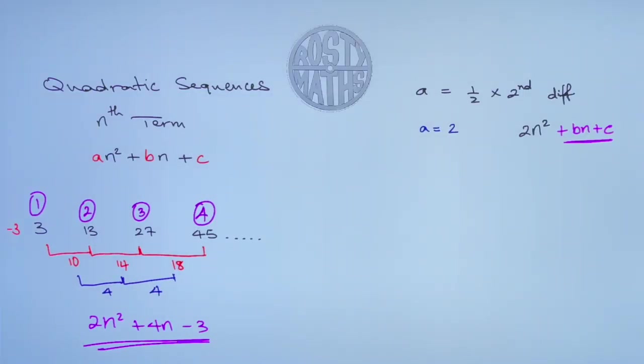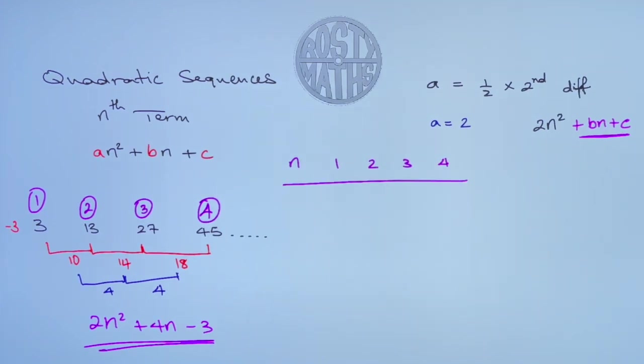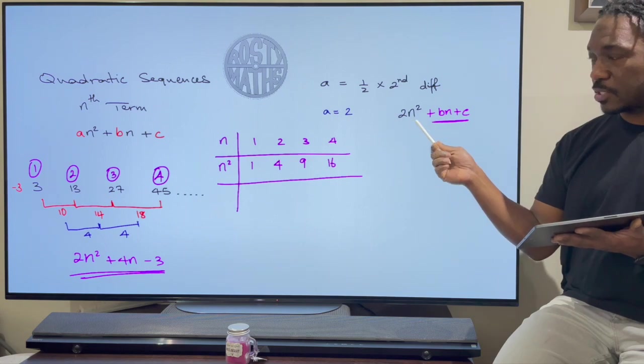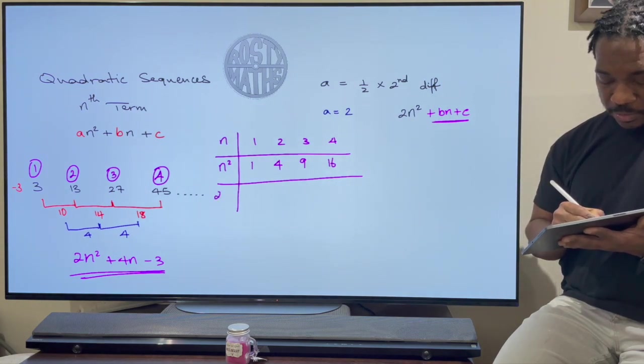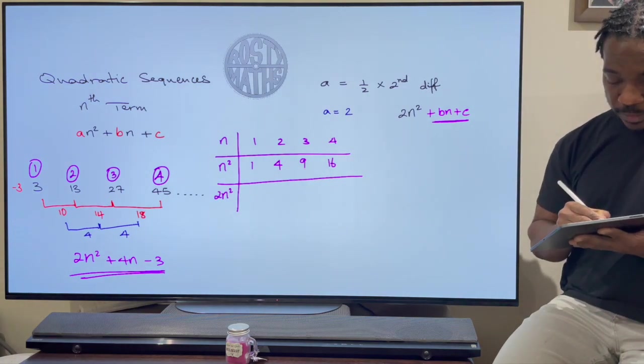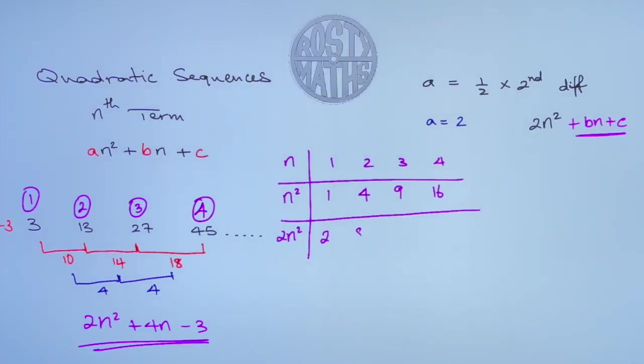Let's go ahead and do that. So now I know that my n's are going to be 1, 2, 3, and 4. You can go further if you like. I know that n² is 1² is 1, 2² is 4, 3² is 9, and 4² is 16. But what I really want is 2n². So I'm going to work out 2n² there. So times all of my n² by 2. So this becomes 2, 8, 18, and 32.